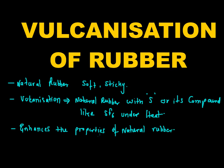Now we'll see how this reaction takes place. So basically what sulfur does is sulfur reacts with natural rubber and it forms a cross-linking network structure.